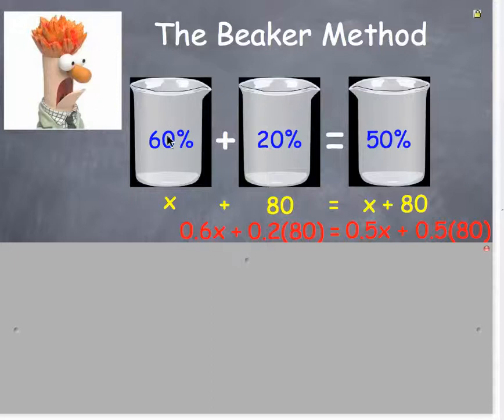Now what I want to do is take the 60% and multiply it by the x and I get 0.6x. Take the 20% and multiply it by the 80. Take the 50% and multiply it to the x and to the 80. We're distributing it.